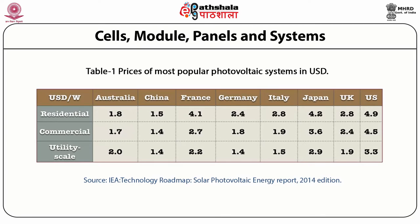The table lists the prices of the most popular photovoltaic systems in US dollars. Residential photovoltaic systems are the costliest in the United States, followed by Japan and France, and utility scale solar cells follow the same trend. The lowest price for commercial photovoltaic systems is in China, which also offers the lowest price residential and utility scale photovoltaic systems.